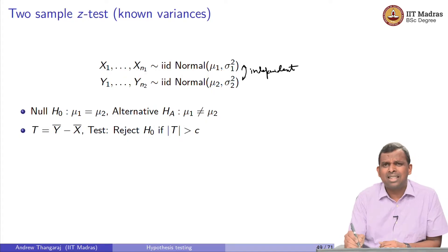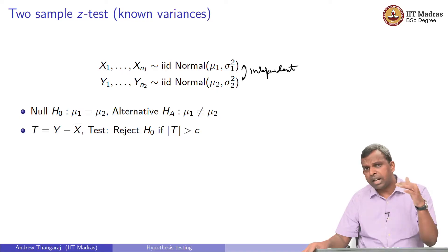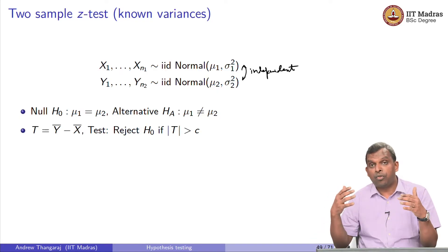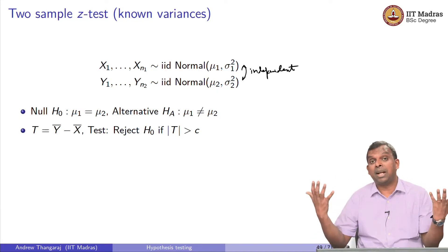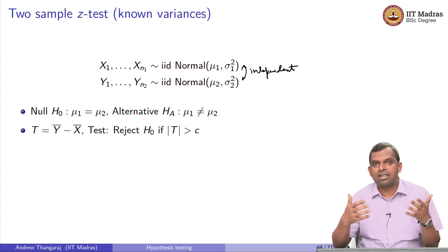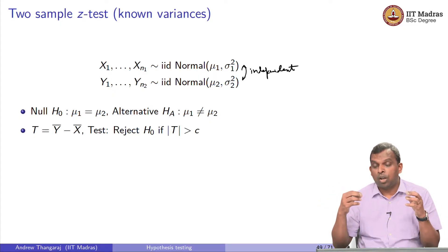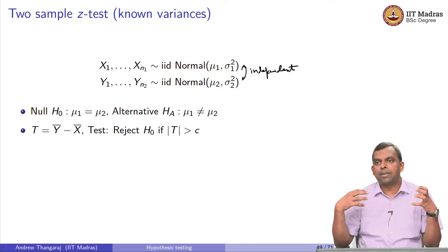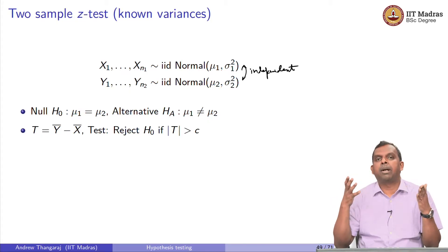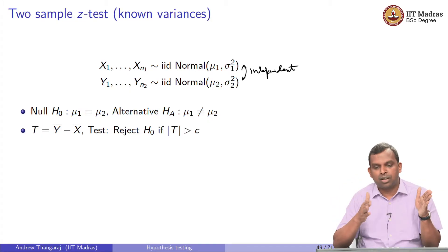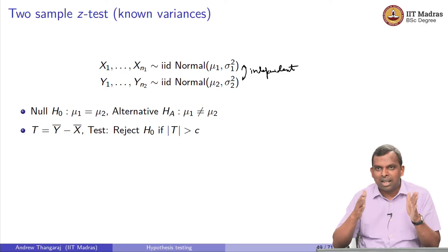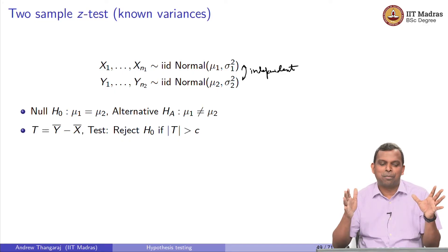Why is independence important? When you look at real data, you will just have samples and you have to first check whether they are independent. If they are not independent, all these tests are not easy to run. If you have to design an experiment to get samples, the number one thing you need is independence — there should not be any way in which one sample can bias the other.